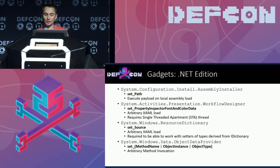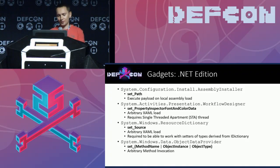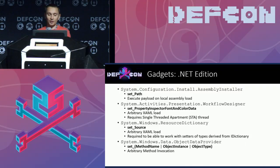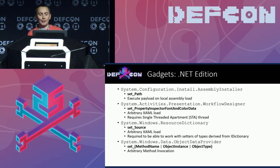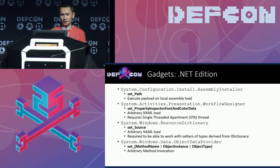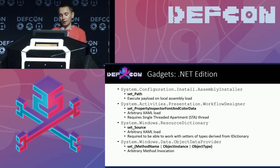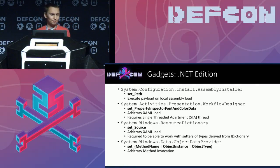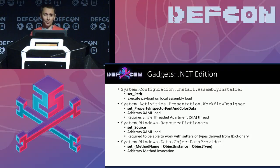The next gadget is the Source setter of ResourceDictionary type. It has a few requirements: the JSON unmarshaller should call setters for types that implement the IDictionary interface, and it should be able to reconstruct a System.Uri object — a type that doesn't have a default constructor, though often unmarshallers can handle this.